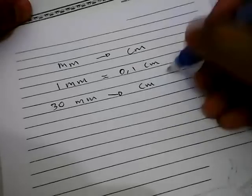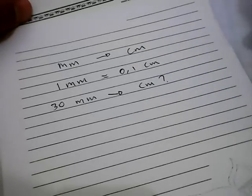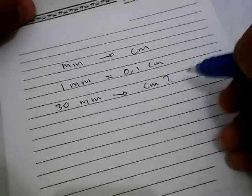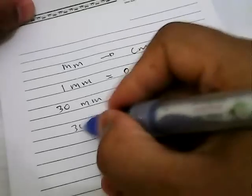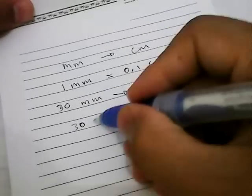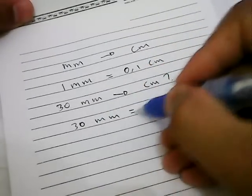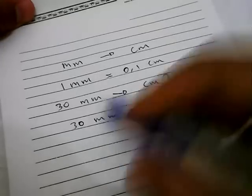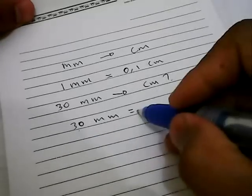30 millimeters and give it an equal sign. Then you need to pull this 30 over here and multiply this 30 by 0.1.